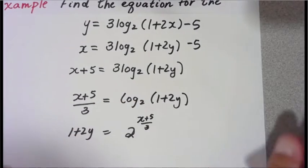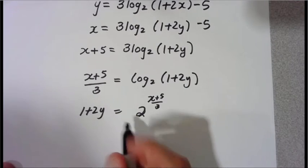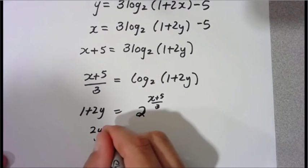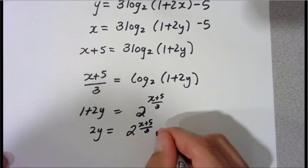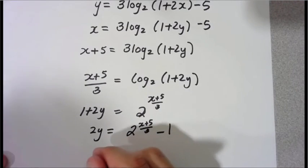We have two steps left here. We've got to go ahead and subtract one. So we're going to do that. So you have two y equals two to the x plus five over three minus one. And now divide everything by two.